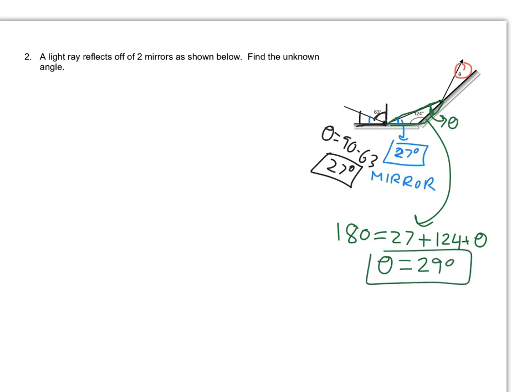For my final bit here, if this is 29 degrees, this will also be 29 degrees. Again, that's because it is a mirror, so that final angle I'm looking for is 29 degrees — because it's another mirror that light is bouncing off of.